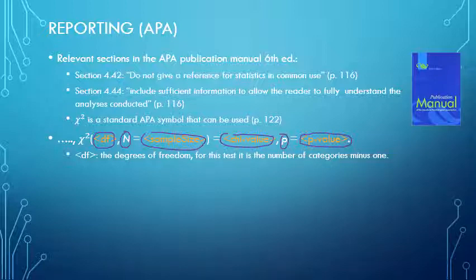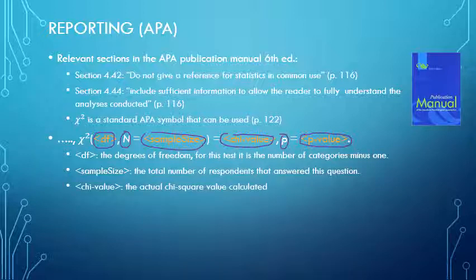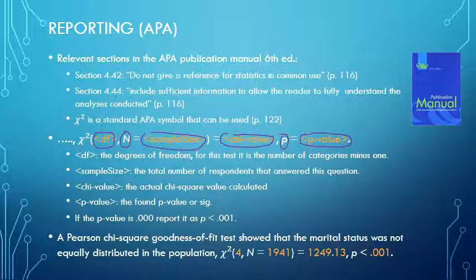The df is the degrees of freedom, which is usually the number of categories minus one. The sample size is the total number of respondents that answered this question. The chi-square value has been calculated, and the p-value—those are the only values you need. One small note: if the p-value is 0.000, you usually report it as p smaller than 0.001.